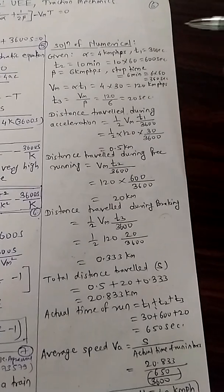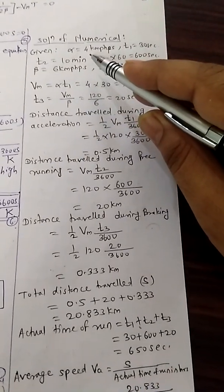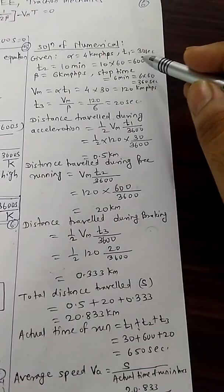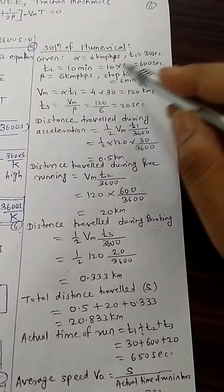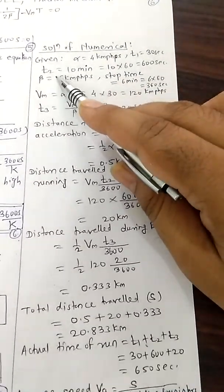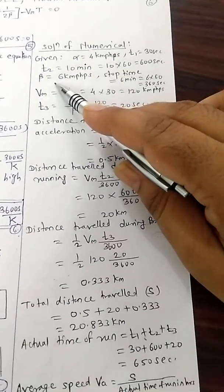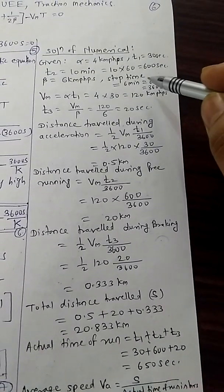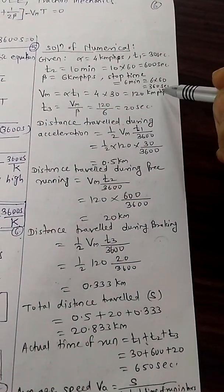The solution of this numerical is first we are writing the given data. Alpha, that is acceleration, 4 kmph per second is given. T1 is 30 seconds, time required to accelerate the train. T2 is 10 minutes, that is 600 seconds. Beta, that is retardation, 6 kmph per second and stop time is given here 6 minutes, that is 360 seconds.